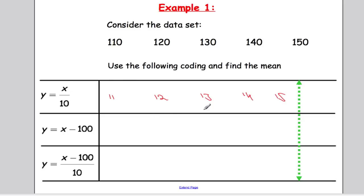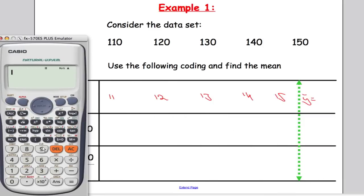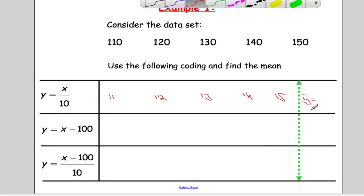Now what I need to do is work out the mean of this data set, so I'm working out y bar. Y bar is going to be found by adding up all these data points: 11 plus 12, 13, 14, and 15, adding them all together, dividing by the number of data points, 5, so we get 13.